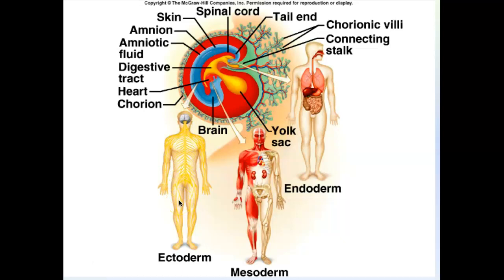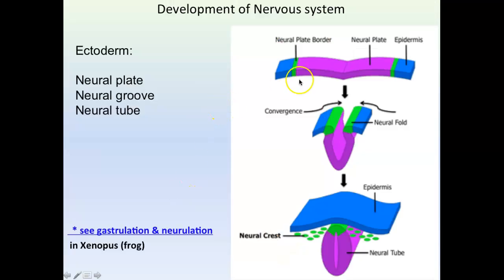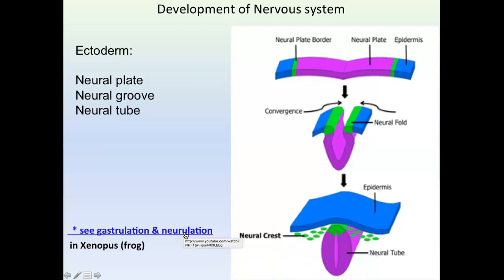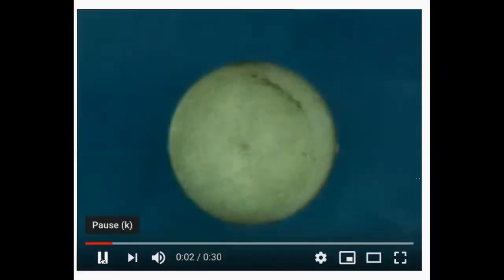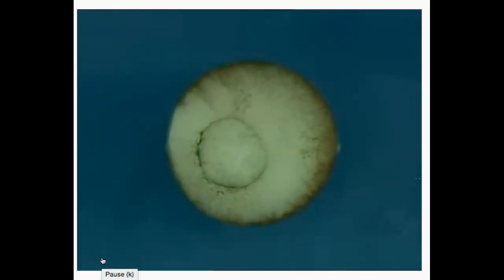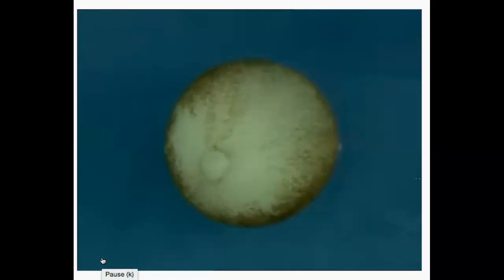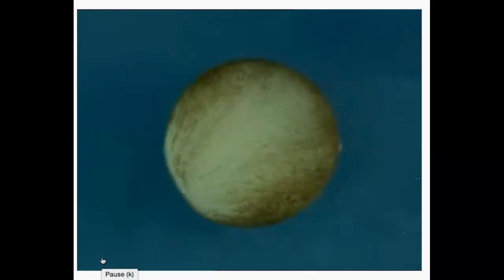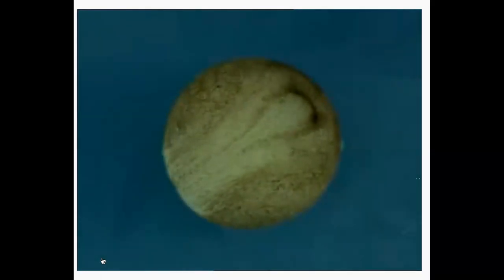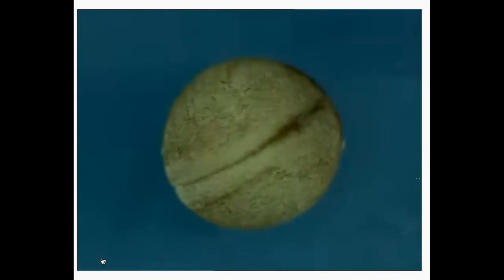The ectoderm is going to fold. It starts off as a sheet called the neural plate. The neural plate will start to fold, and the groove formed during folding is called a neural groove. The finished product is a tube called the neural tube. In a video of a frog egg, you can see the neural plate, then the neural groove forming, then the folds coming together to form a complete neural tube.